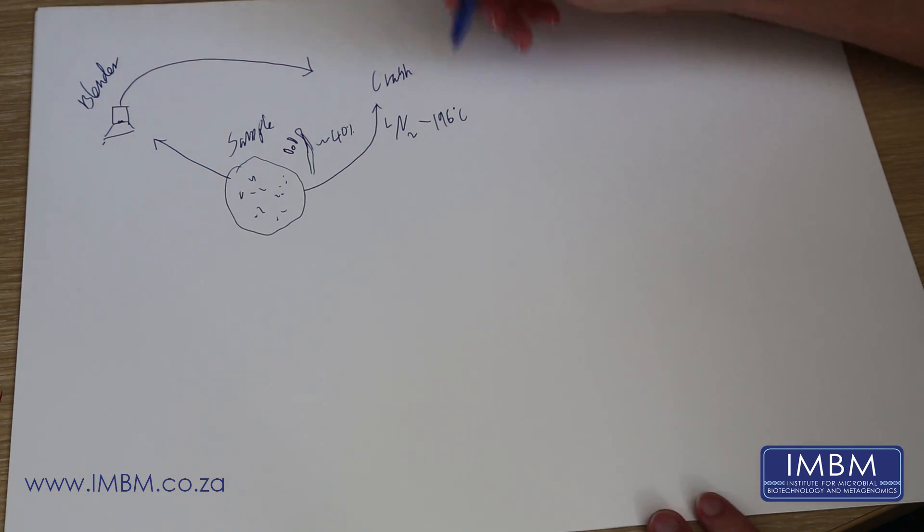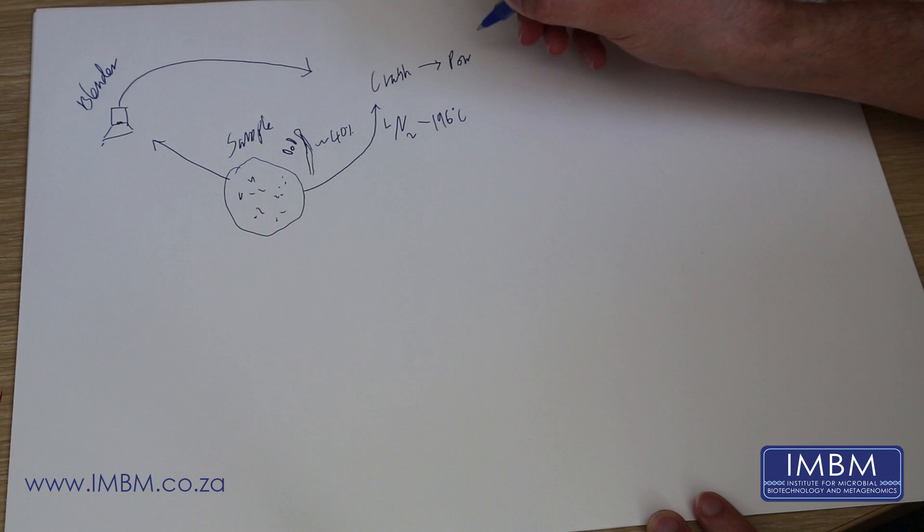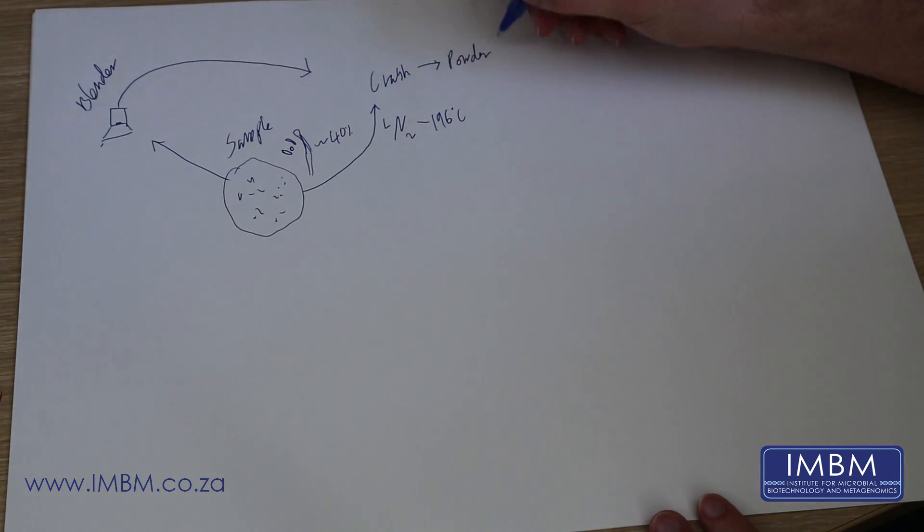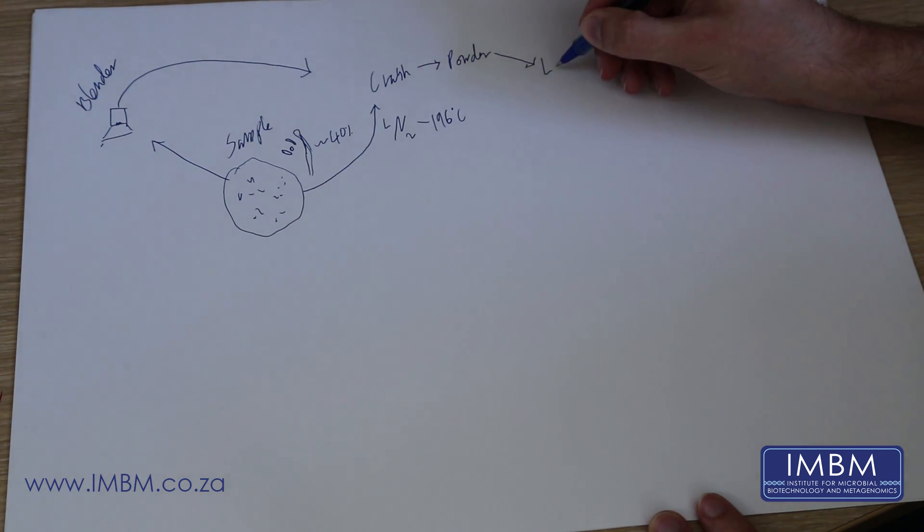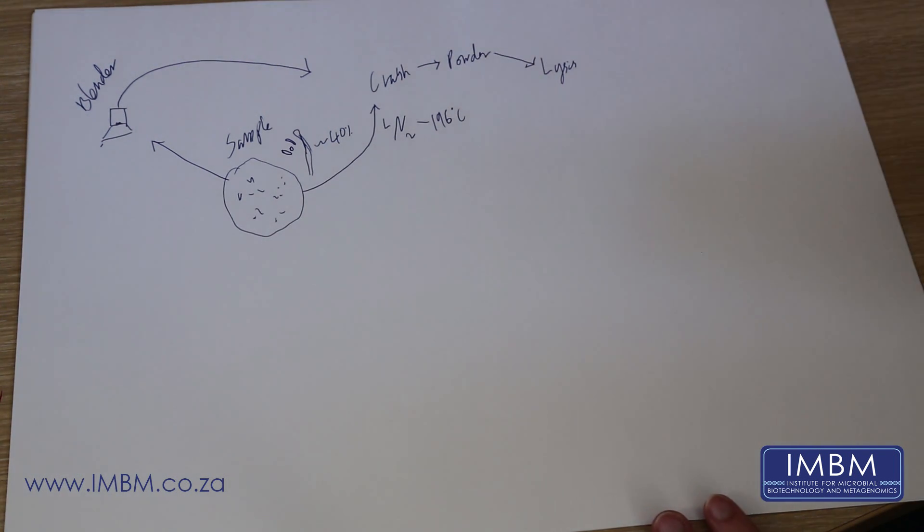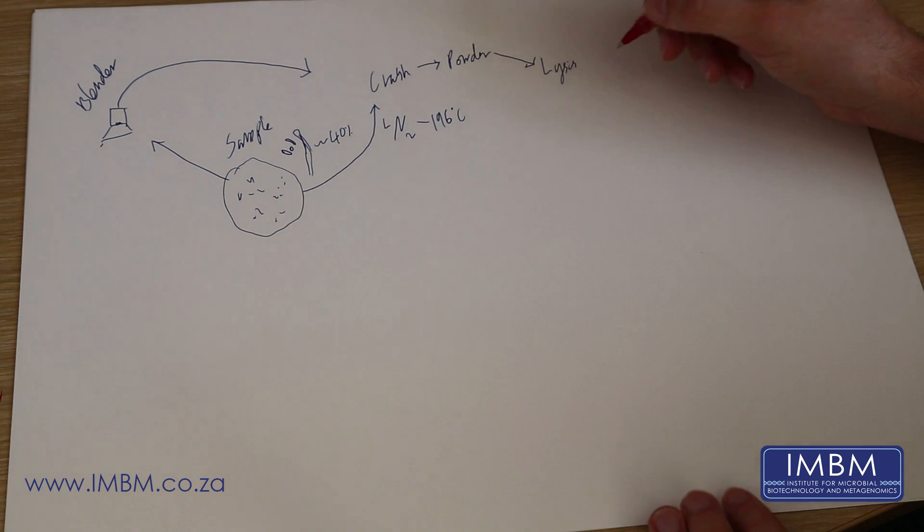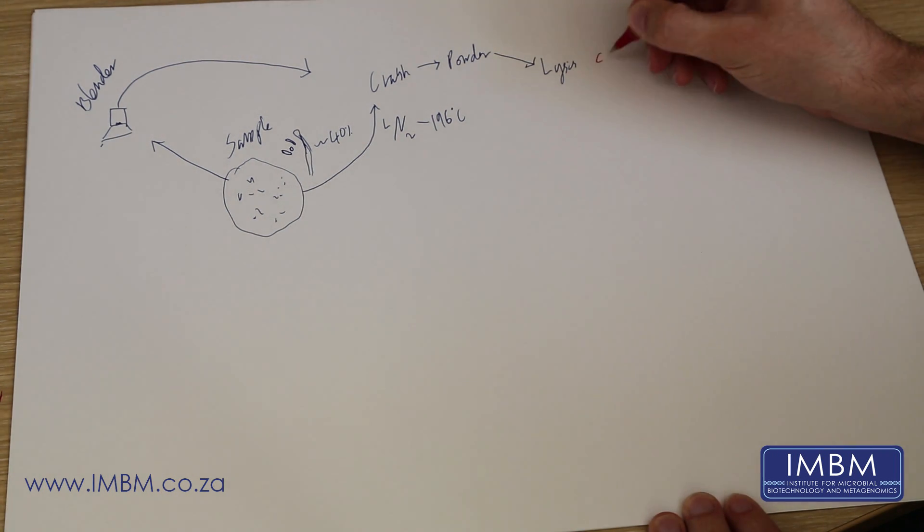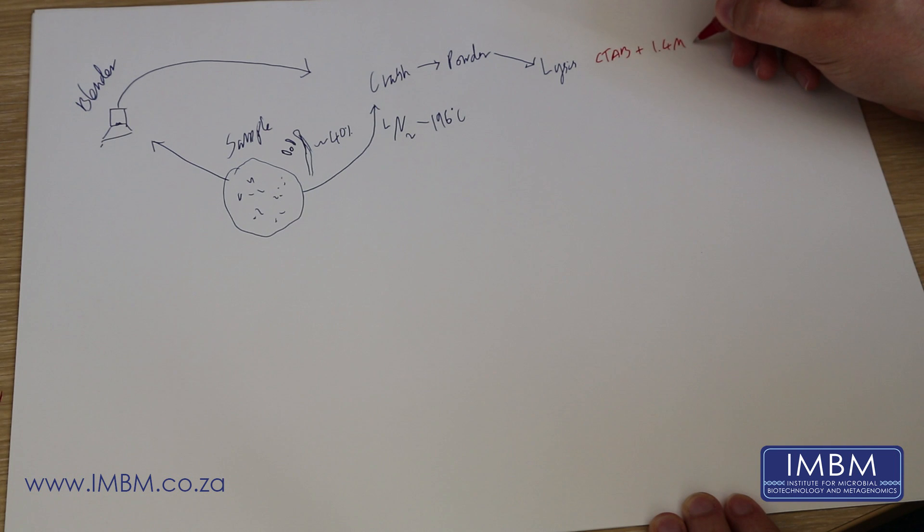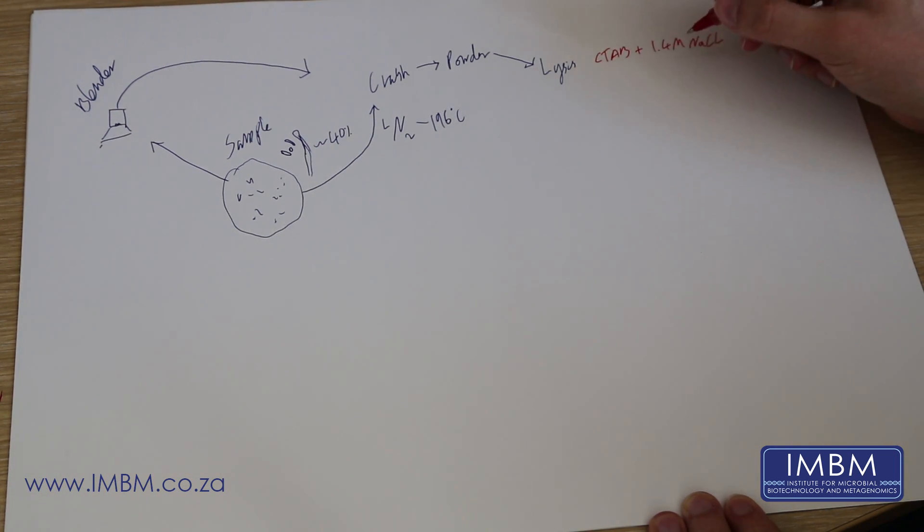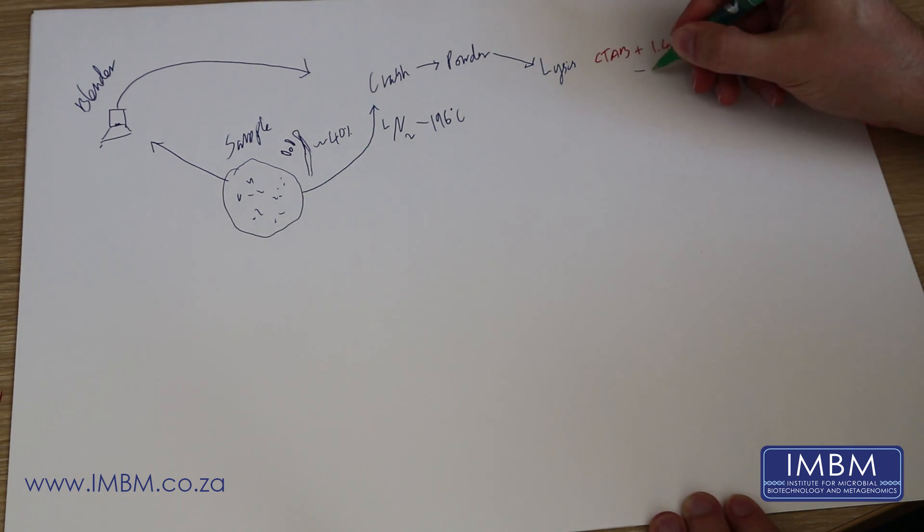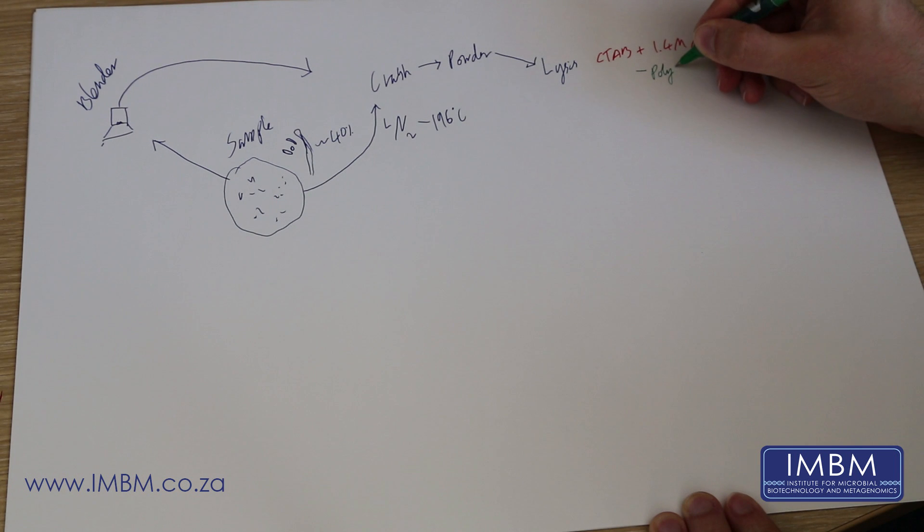Really, really fine powder. This powder is then added to a lysis buffer, and this is the really important bit. In your lysis buffer, you need to have a number of chemicals. We have found that a two-step lysis is best. The first step is simply a CTAB plus 1.4 molar sodium chloride. This is to remove the polysaccharides.